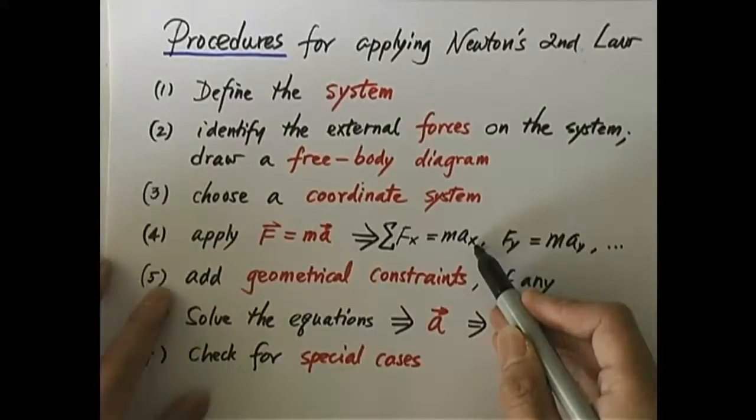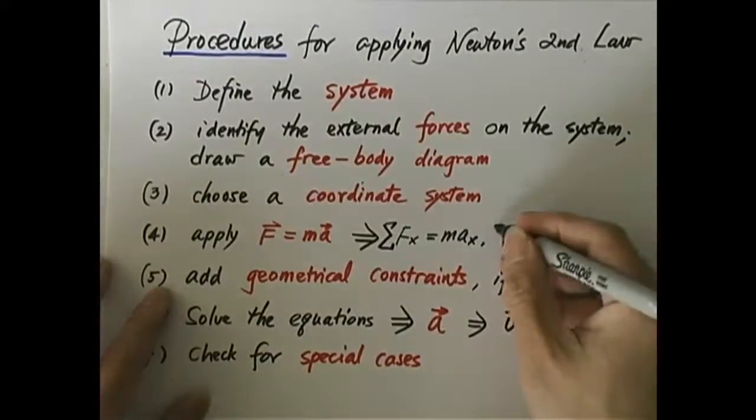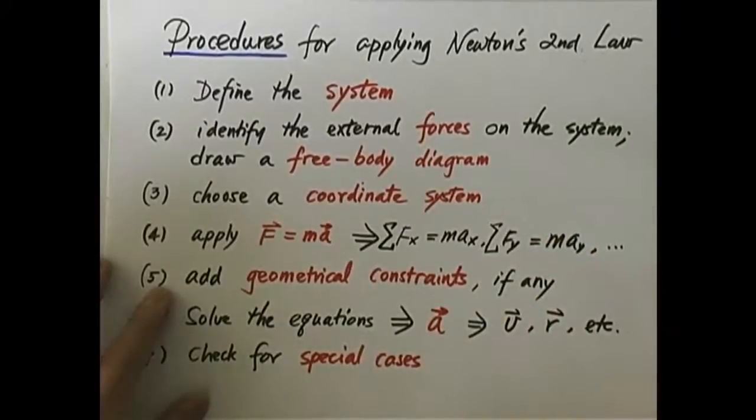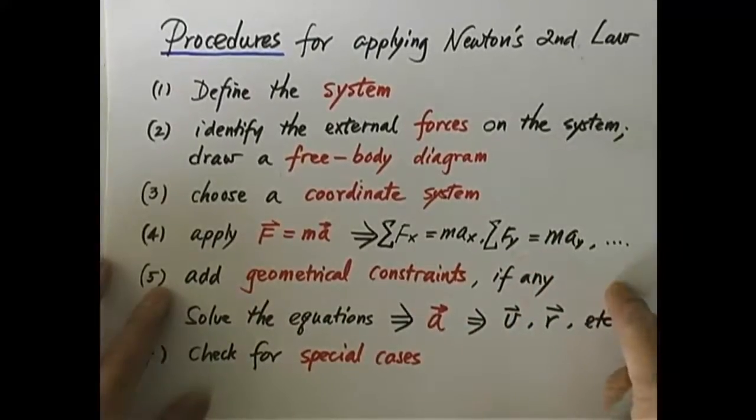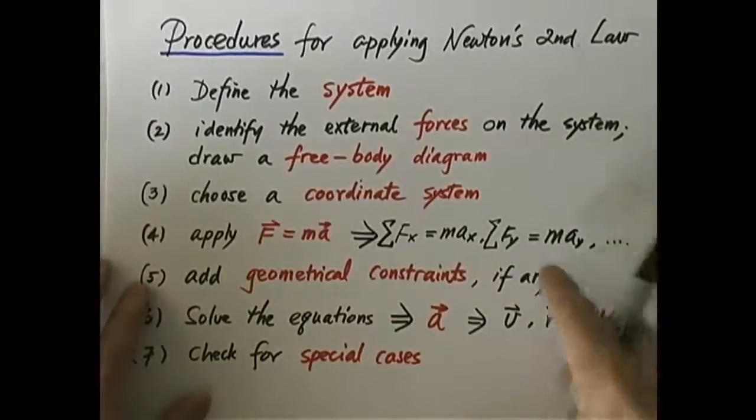So why does the object move, accelerate in the x direction? That is because there is a net external force exerted on it in the x direction. Same thing happens in the y direction. If you add all the net forces in the y direction, or the y component of the net force, you find that you will get the corresponding acceleration in the y direction. And the same thing happens in the z direction. So you have three equations, up to three equations, if it's a three-dimensional motion.